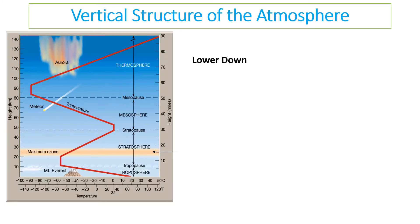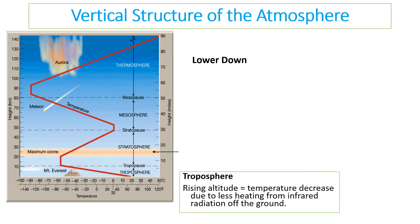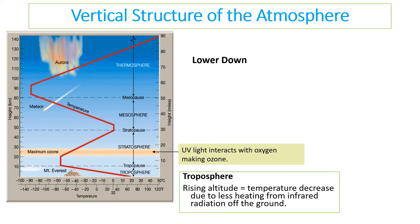You need to know about the vertical structure of the atmosphere. Starting at the bottom, we have the troposphere — that is the layer we live in. As you go higher up, due to changes in air pressure and the number of particles, the temperature decreases because there is less heating from infrared radiation off the ground, less reflection of that heat, and less conduction between particles.